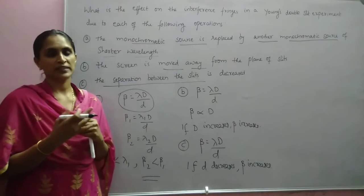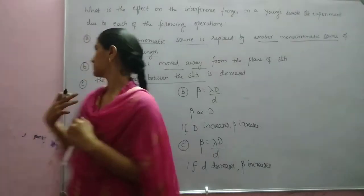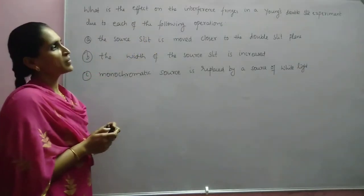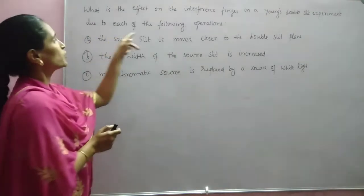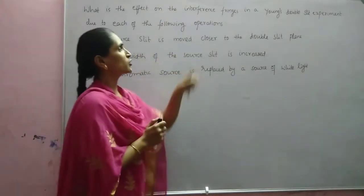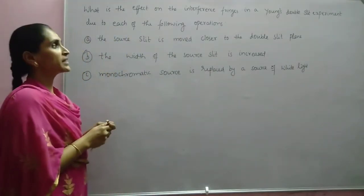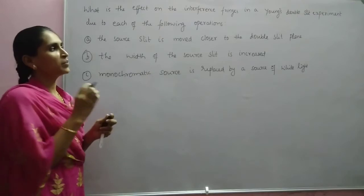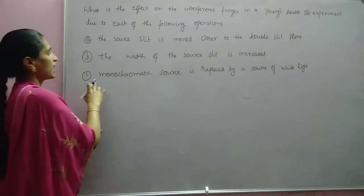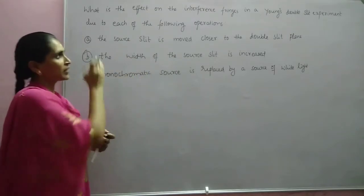Now we will discuss the next question: What is the effect on the interference fringes in a Young's double slit experiment due to each of the following? First, the sole slit is moved closer to the double slit plane. Second, if the width of the sole slit is increased. Third, if the monochromatic source is replaced by a source of white light.